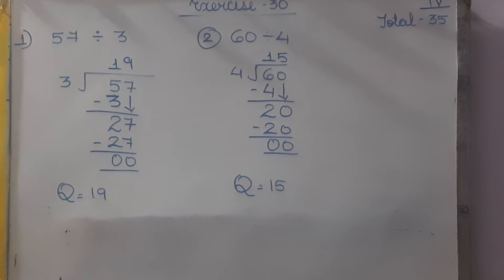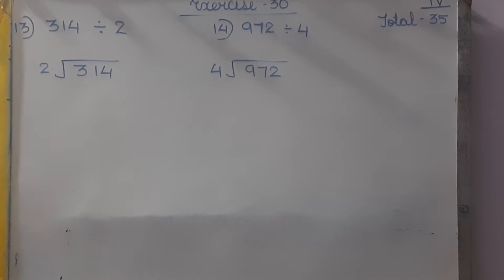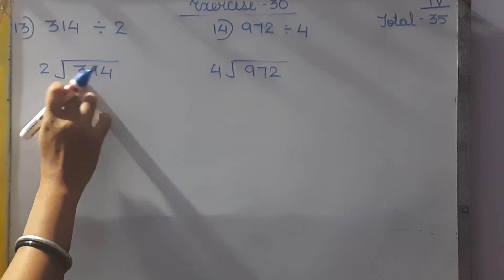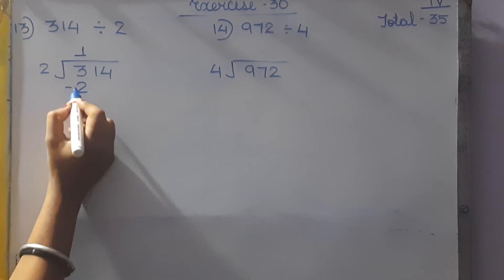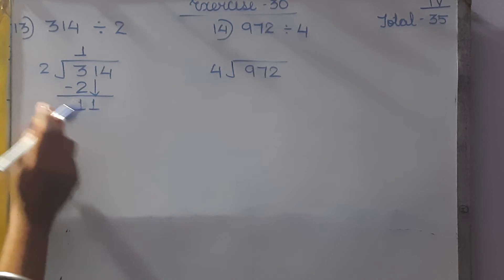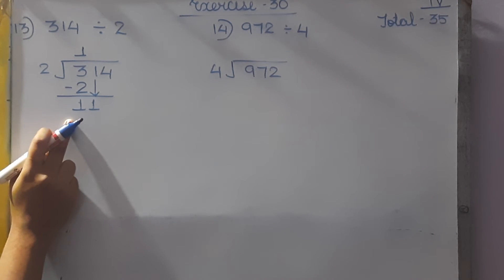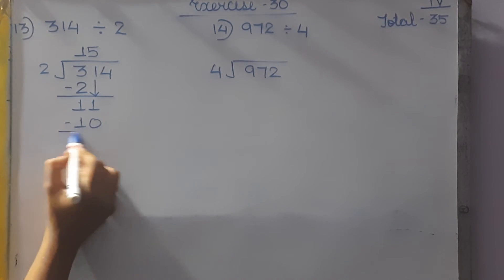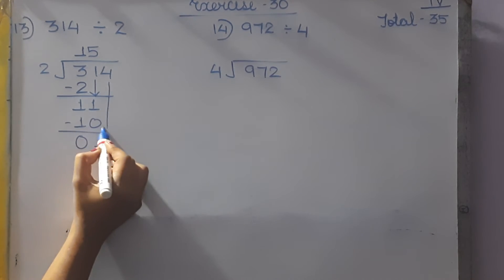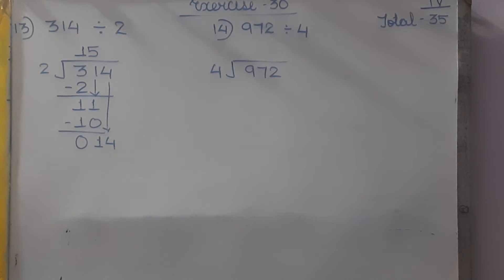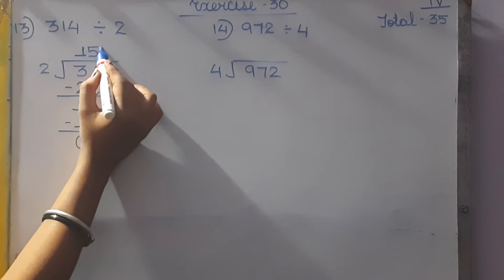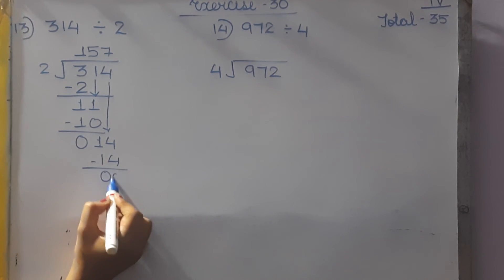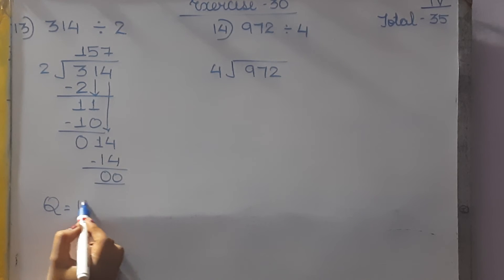314 divided by 2. In the table of 2, 3 doesn't come exactly. 2 ones are 2, 2 twos are 4 — 4 is bigger than 3. So we take the smaller number: 2 ones are 2, so 3 minus 2 is 1. Bring down 1. In the table of 2, 2 fives are 10 — less than 11. So 11 minus 10 is 1. Bring down 4. 2 sevens are 14, so remainder is 0. The quotient is 157.